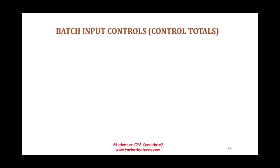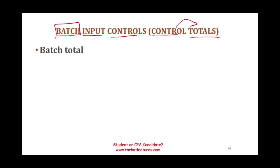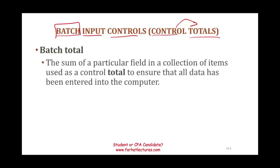Hello and welcome to this session in which we would look at batch input controls, sometimes called control totals. In your textbook or CPA review course, they might refer to it as control totals. A batch total or batch input control or control total is when you sum up a particular field in a collection of data items and use that total as a control to ensure that all the data has been entered into the computer system.